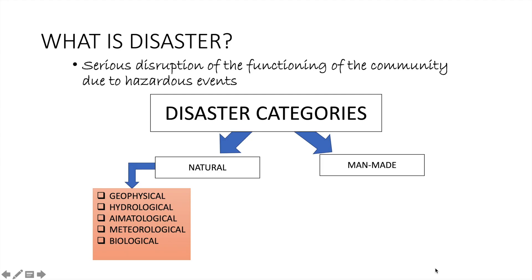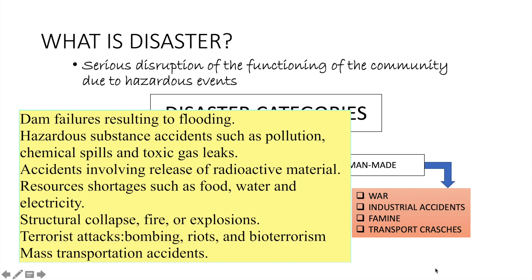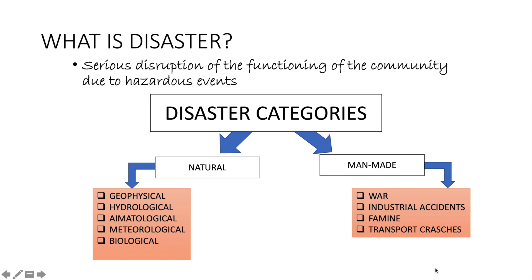Meanwhile, in the man-made category, this can be war, industrial accidents, famine, or transport crashes. This includes dam failure resulting in flooding, hazardous substances, accidents like pollution, chemical spills, or toxic gas leaks, or accidents involving the release of radioactive material. It can also be resource shortages like food, water, electricity, structural collapse like fire or explosions, terrorist attacks such as bombing, riots, and bioterrorism, or even mass transportation accidents.